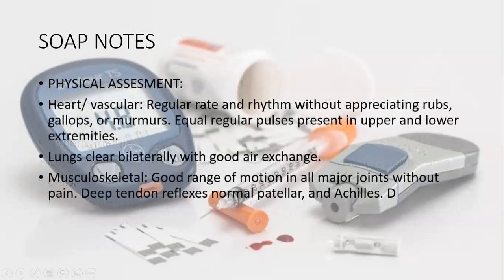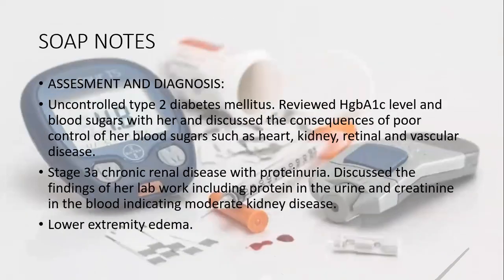Physical assessment shows heart and vascular rhythm is regular without appreciable gallops or murmurs. Lungs are clear bilaterally with good air exchange. Musculoskeletal shows good range of motion in all major joints without pain. Moving to assessment and diagnosis, this is the major part of the SOAP note — Subjective, Objective, Assessment, and Plan.